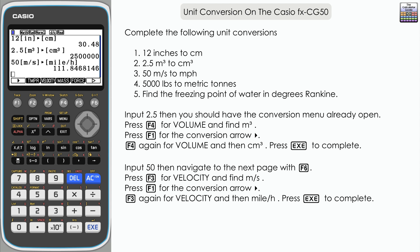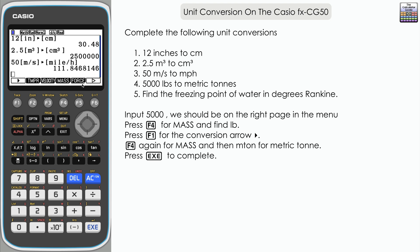Example four then: 5000 pounds to metric tons. That's quite critical so let's input 5000 and then we're looking at units of mass so it's F4. Navigate down, we're looking for pounds, lb. There we go, so it's 5000 pounds, conversion arrow, and then mass again and we want option five here, it says m ton.